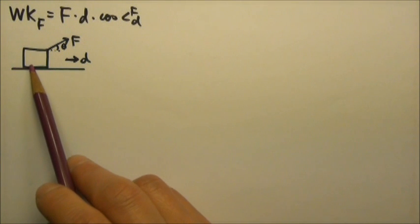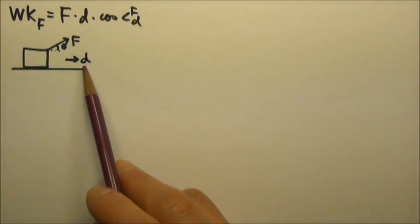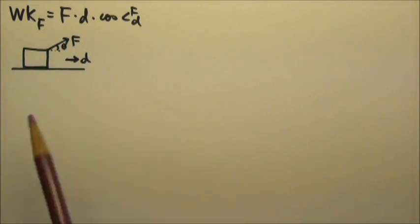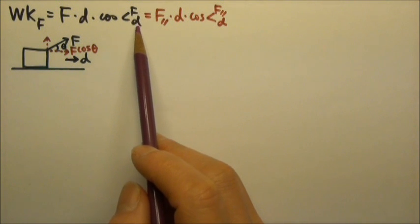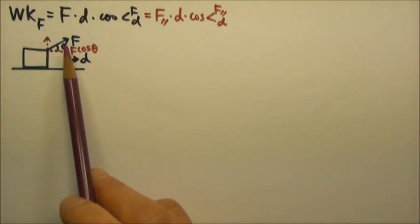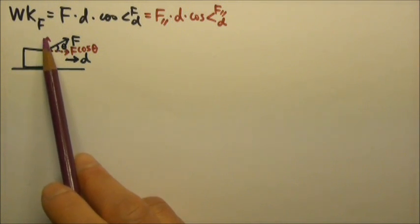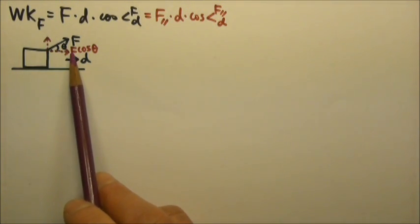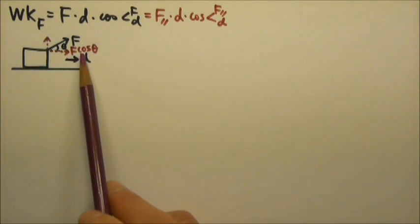For example, here I have a box that's being pulled by the slanted force F to the right for a distance d. The reason why we multiply by cosine of the angle between the force and the displacement is because this slanted force has two components: one perpendicular to the displacement, and the other parallel to the displacement.